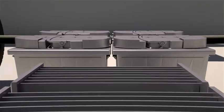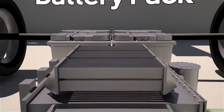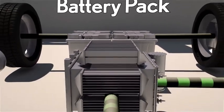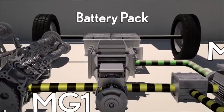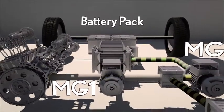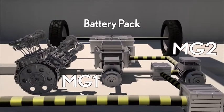The hybrid battery pack is like a fuel tank for the electric motors. It stores electricity generated by MG1 and MG2 when they're acting as generators. Then it sends that energy back to MG2 when it's needed to power the vehicle.